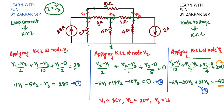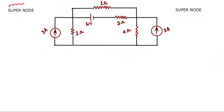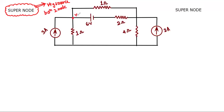Now we move to a special case of KCL — nodal analysis with a super node. A super node occurs when there is a voltage source connected between two nodes. For example, if node v1 and node v2 have a 6-volt voltage source directly between them, this special case is known as a super node. It is simple once you understand the fundamentals.